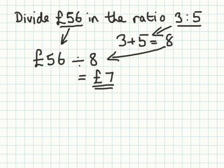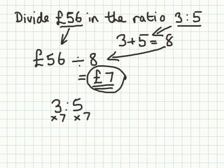At this stage, all I do now is get my ratio, which I started off with and it was 3 to 5. And I times each part of the ratio by 7, because I have 7 here. 3 times 7 is 21, 5 times 7 is 35.